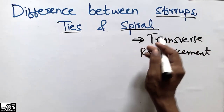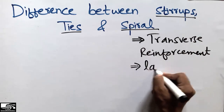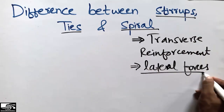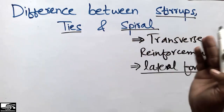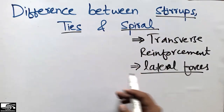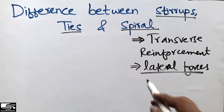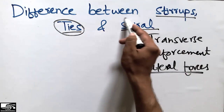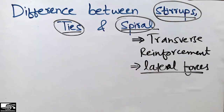Their function and purpose is the same — they are used for lateral forces. Lateral forces means shear forces or earthquake forces; they are designed for earthquake resistance forces and wind forces. So their main purpose is lateral force resistance. All three — ties, spirals, and stirrups — have the same function.